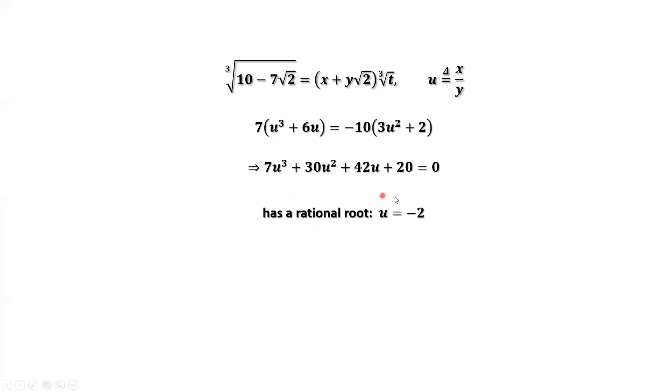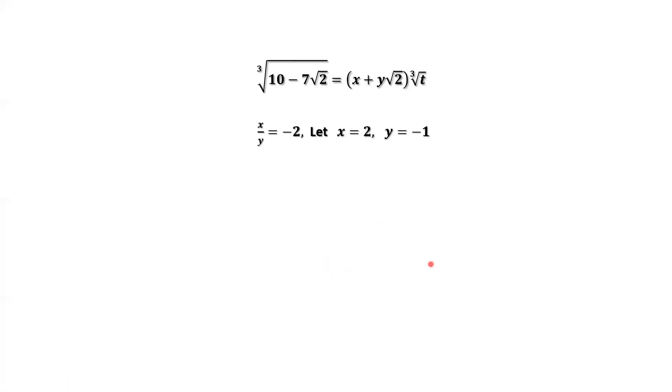By the way, when you try to finish solving this equation, you will find the other two are irrational solutions. We only have one rational solution. U equals negative 2. U is defined by x over y. This means x over y equals negative 2. So here we can assume x equals 2, y equals negative 1.